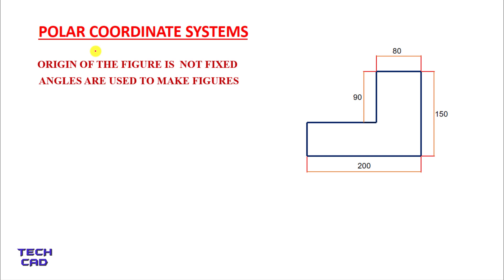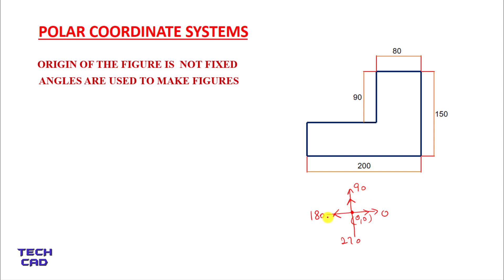So why we use the angles, and what is the syntax of polar coordinate system — it is very easy. First of all we understand the angle: this is 0, then 90, then 180, then 270. This becomes a region for the figure. Whenever my line moves towards the right side, the angle is 0. If my line moves upwards, it is 90. If my line moves towards the left, it is 180, and if it is downside then it is 270.